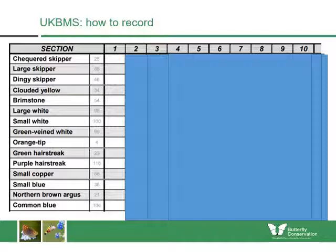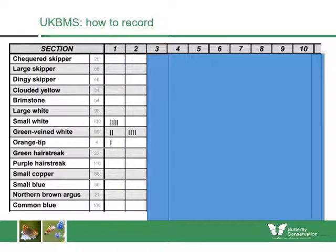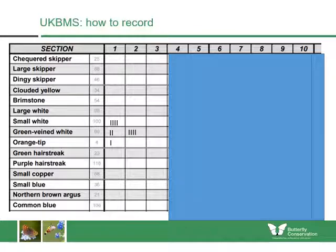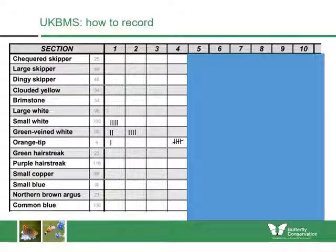Here's an example of how to complete the recording form. I tend to use a tally so you can add new individuals as you go along. In section one: four small whites, two green-veined whites, and one orange-tip. Section two: four green-veined whites. Section three had nothing, so put a line through it so you don't record there again. Section four: four orange-tips. Complete it as you go along — different transects have different numbers of sections, from as few as three or four up to fifteen.